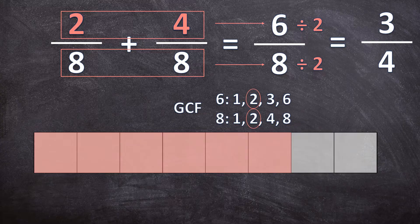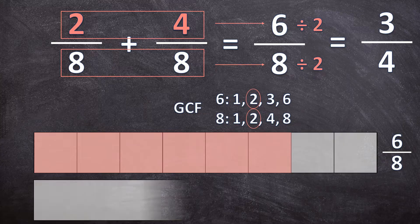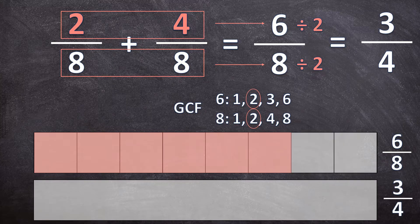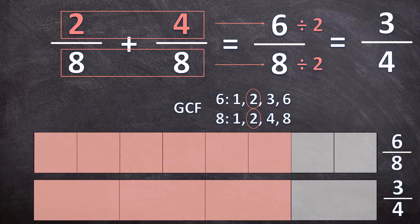Let's visualize the simplified fraction. The first rectangle divided into 8 pieces demonstrates 6 over 8 — 6 out of 8 parts are colored in. Now we take the same shape and demonstrate the simplified fraction by dividing it into 4 pieces and coloring in 3 of those pieces. Can you see that the red parts and the white parts of these shapes are equal? They are the same fraction — 3 over 4 is just a simplified form of 6 over 8. They are equivalent fractions representing the same amount.